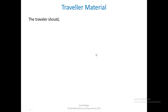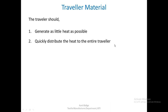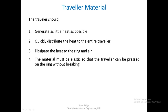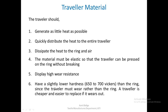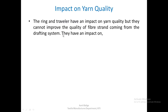The traveler material should generate as little heat as possible, quickly distribute heat to the entire traveler, and dissipate heat to the ring and air. The material must be elastic so the traveler can be pressed onto the ring without breaking, and must display high wear resistance. It should have a slightly lower hardness — 650 to 700 Vickers — compared to the ring, since the traveler must wear out rather than the ring. The traveler is a smaller, cheaper, and easier piece to replace.